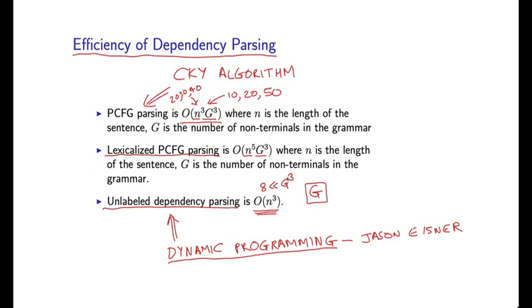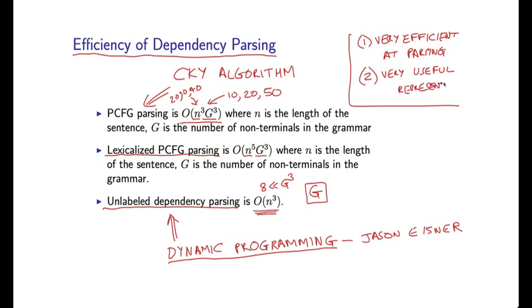And that is a major reason for, like I said, taking dependency parsing very seriously. So, it has two properties which I think are very beneficial. So they're very efficient parsing. Secondly, they are very useful representations. So, if we can recover these kind of dependency structures, they're useful in many applications in natural language processing.